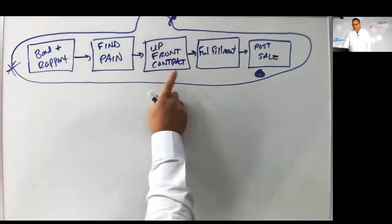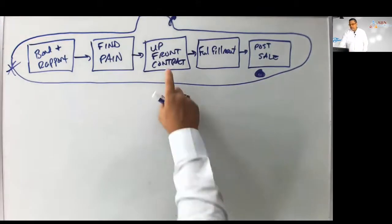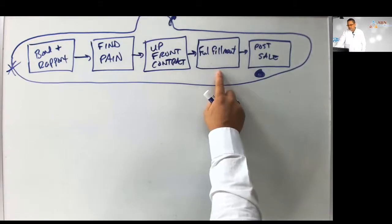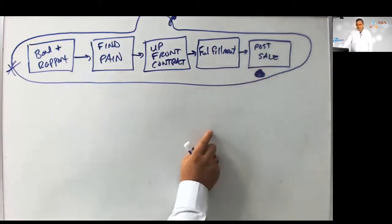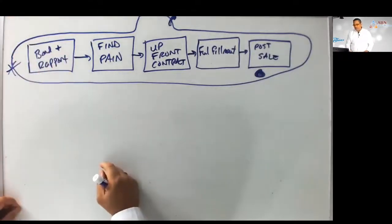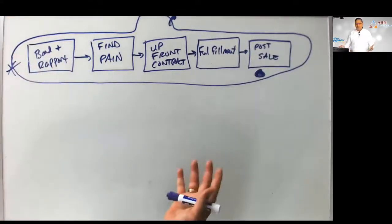It's all sequential. Once you get bond and rapport done, then you go into finding pain. But you can't go into upfront contract until you've got the pain process locked down. Once this is locked down, then you can go into fulfillment. Once fulfillment is locked down, you've got the application written up and submitted, then you go to the post-sale. It's all nice, tidy compartments. They all build on each other.